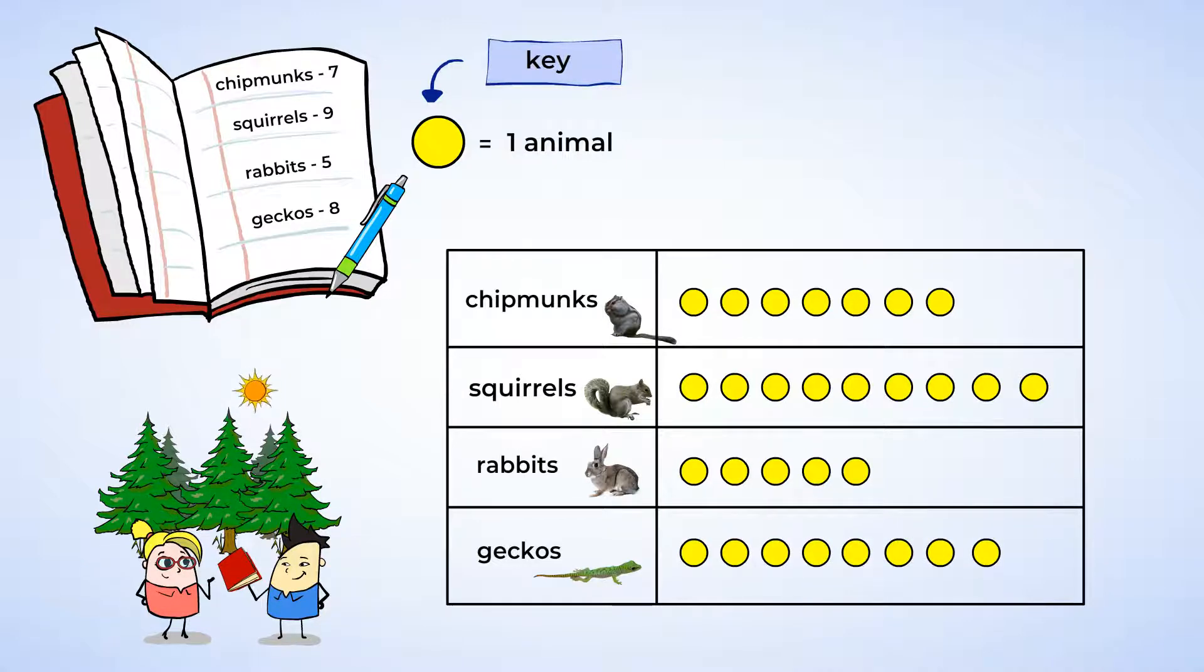And we can show eight geckos with eight circles. Finally, we need a title for our picture graph. You could call it Animals on the Nature Walk. Nice job! You created a picture graph showing all of the animals that the kids saw.